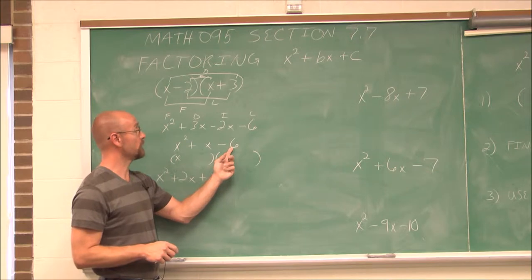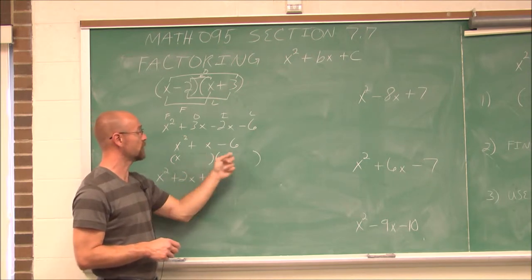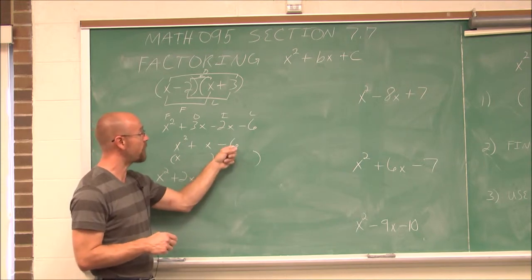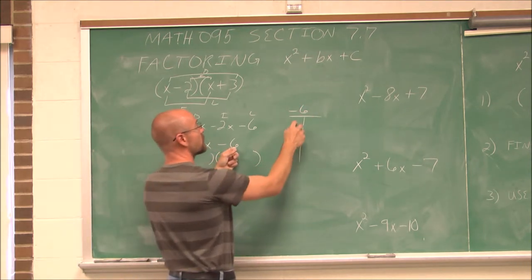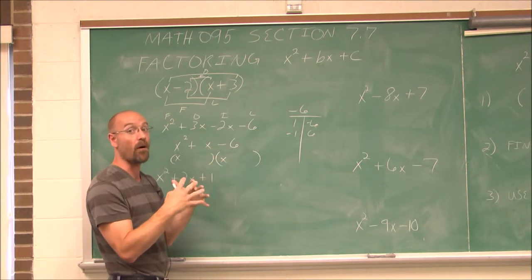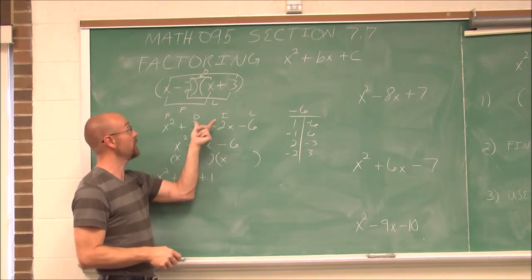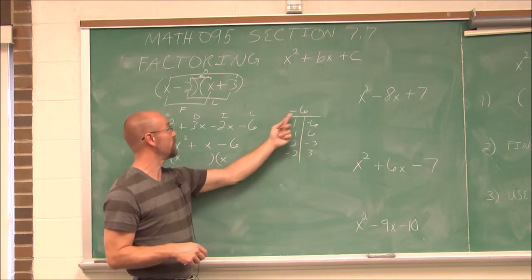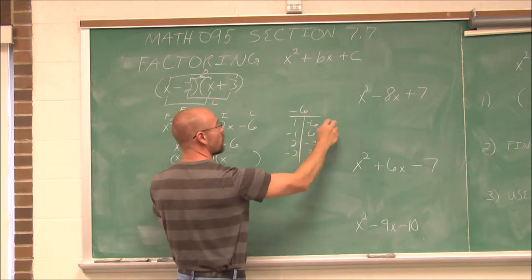The last term is the product of the last terms, and the outer and inner terms give the sum of those. So I have to think about what are the factors of negative 6. I'll write all the factors: 1 and negative 6, negative 1 and positive 6, 2 and negative 3, and negative 2 and positive 3. Since the middle term is the combination of outer and inner terms — their sum — I want to find the factors that sum to my middle term.